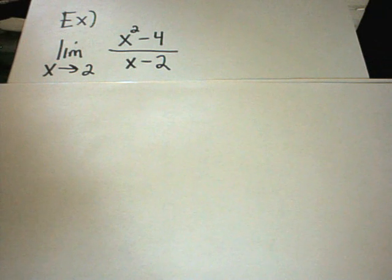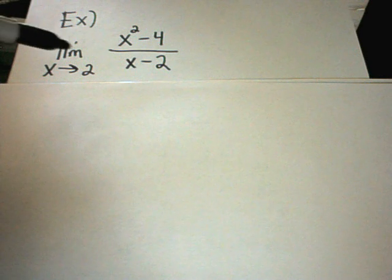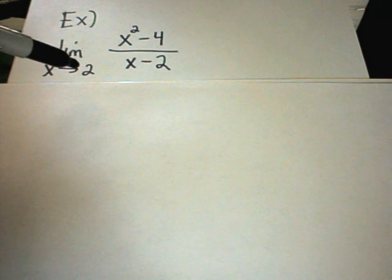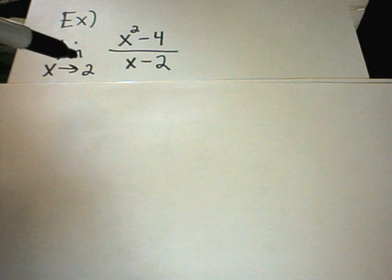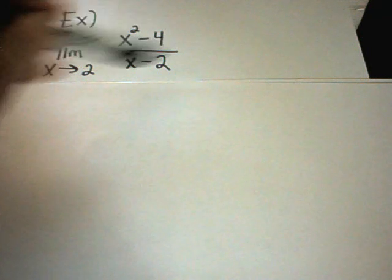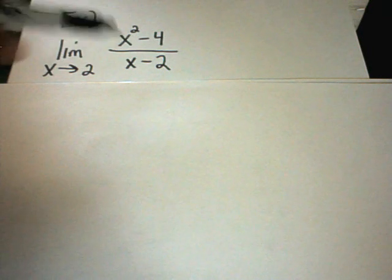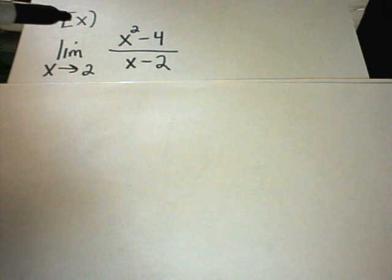The idea is we're putting in numbers close to 2 and trying to see what types of numbers we get out. Of course, you could always do this on a calculator. Plug in 1.9, 1.99, 1.999. Put each of those numbers into the formula and see if the numbers you're getting out are getting close to something.